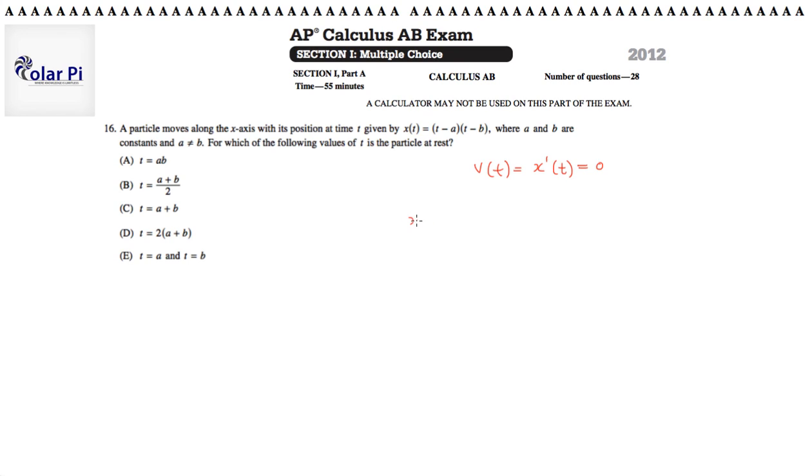One is to view x of t, the function you're given, as a product of two functions, f of t and g of t, where f of t and g of t are the linear functions t minus a and t minus b, respectively.